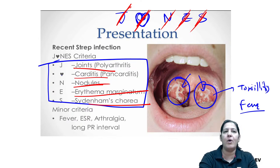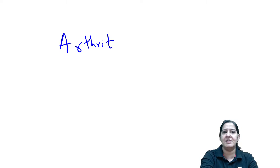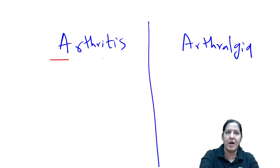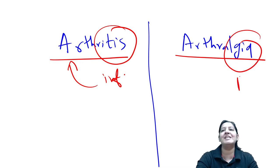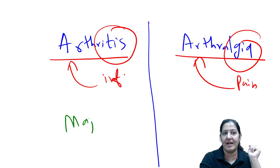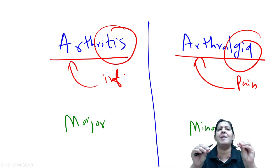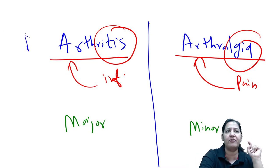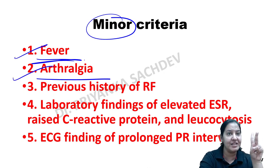The five minor criteria are: number one, fever; number two, arthralgia (not arthritis); number three, previous history of rheumatic fever (rheumatic fever tends to reoccur); number four, three lab findings elevated — ESR, WBC count, and CRP (C-reactive protein); and number five, ECG showing prolonged PR interval, because the heart is always involved with vegetations on the walls.